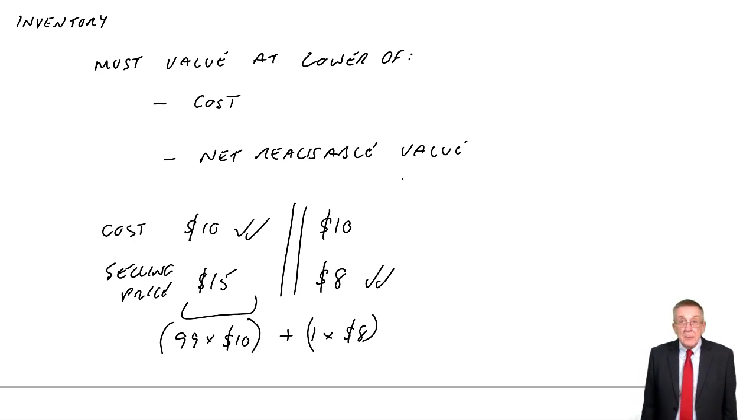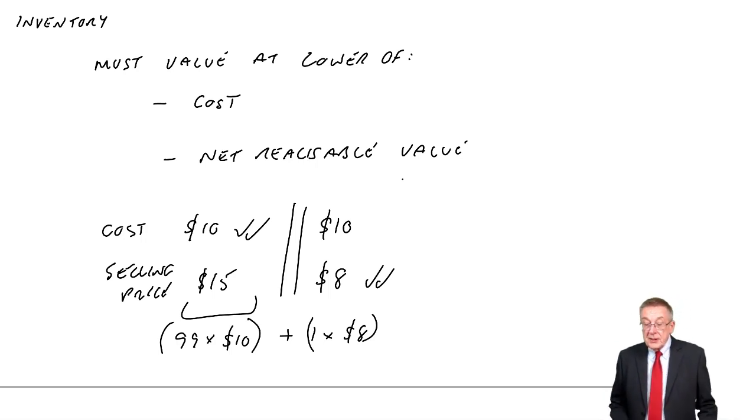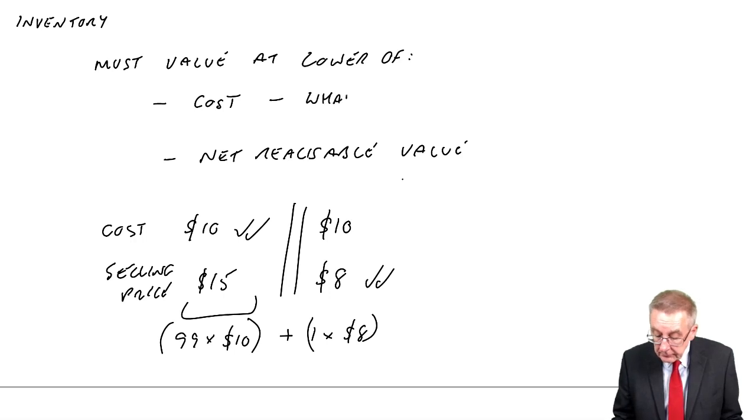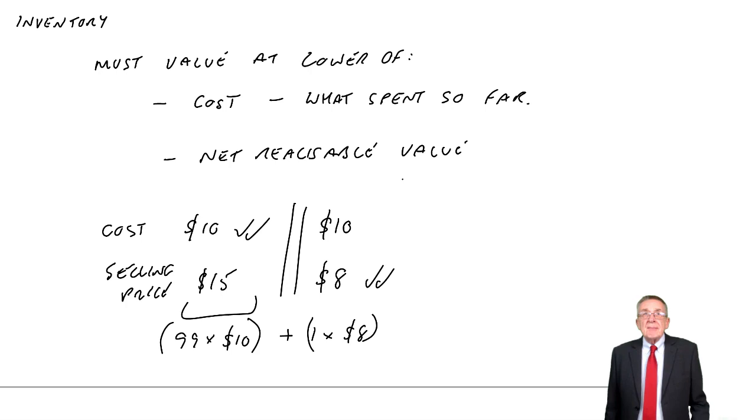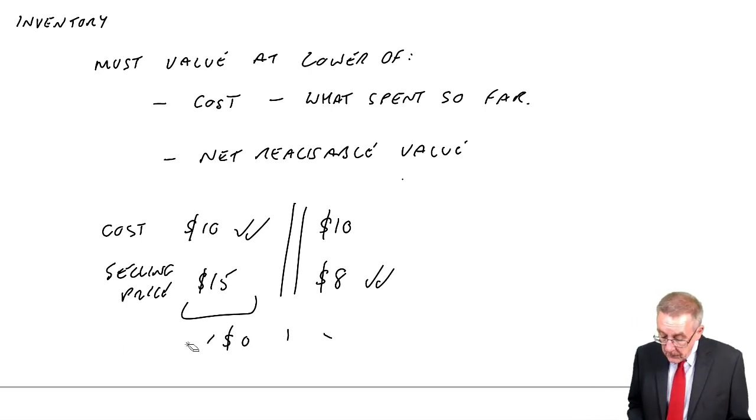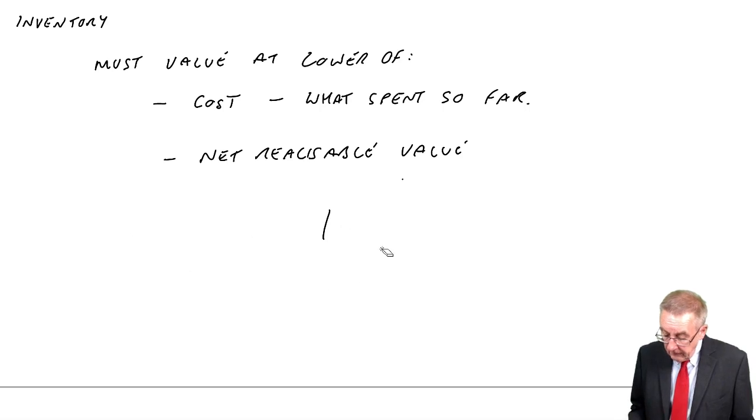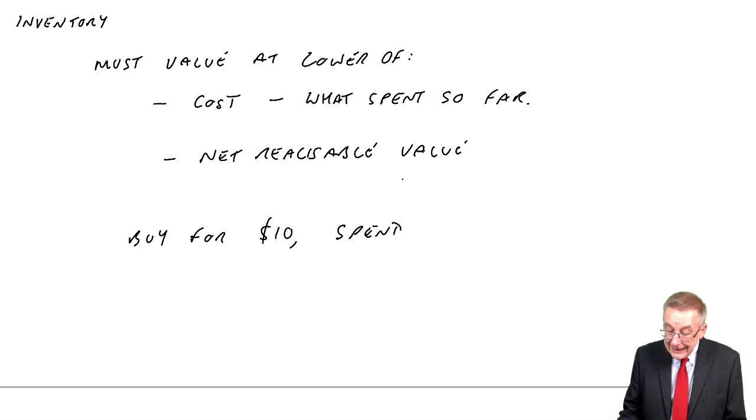I said I needed to say slightly more about what we mean by cost and net realizable value. Cost is what we've spent so far. What I mean by that is that maybe the desks I buy for $10, we then spend an extra $1 delivering to customers.